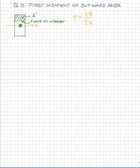The value Y-bar prime that you see in your equation is the distance between the centroid of the section, or the neutral axis, and the centroid of the outward area, as depicted by this distance. So when calculating Q, multiply the outward area by the distance from the neutral axis to the centroid of the outward area.